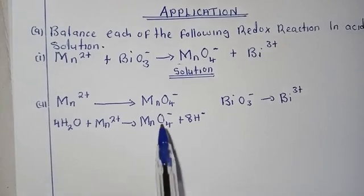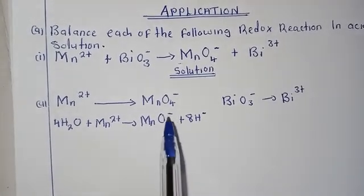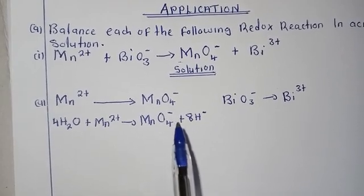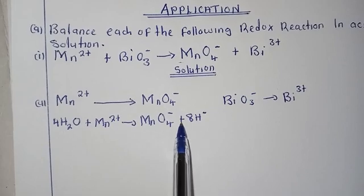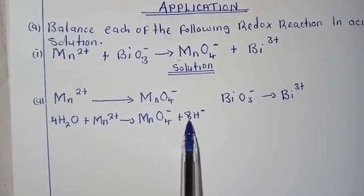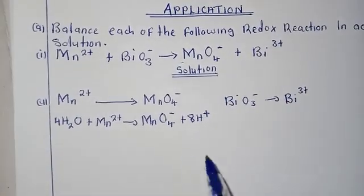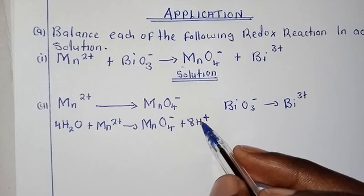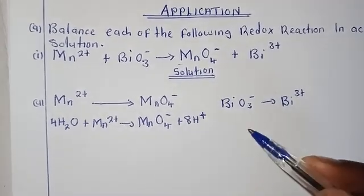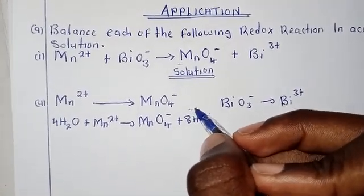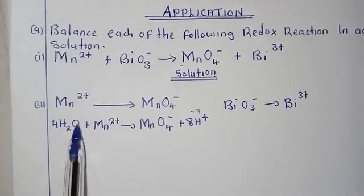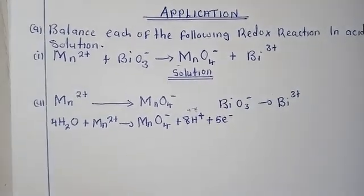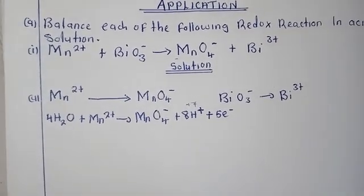Now let's balance the charges. Here we have a +2 charge; here we have eight negative, and here we have one, so eight negative minus one gives us a net of negative seven on one side. For the other side we get positive seven, meaning to balance the charges between both sides we need to lose five electrons. So we add five electrons to balance this first half reaction.